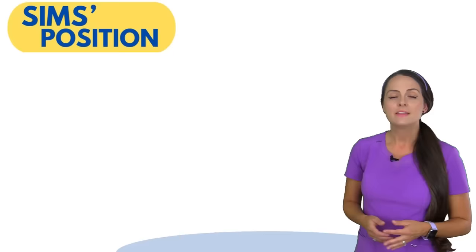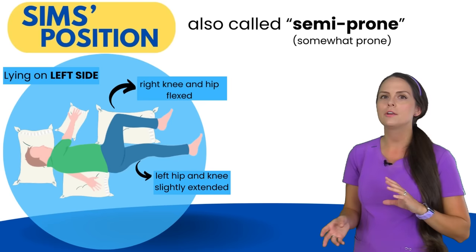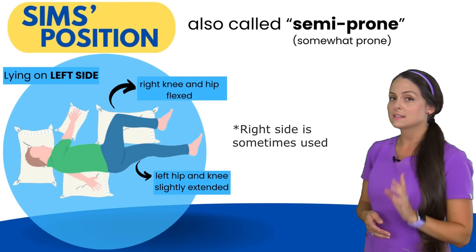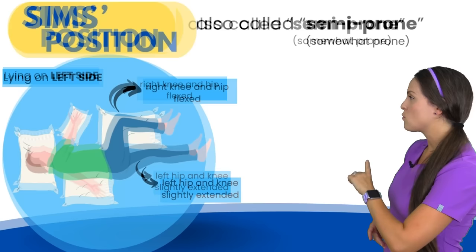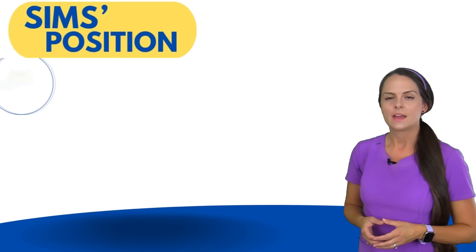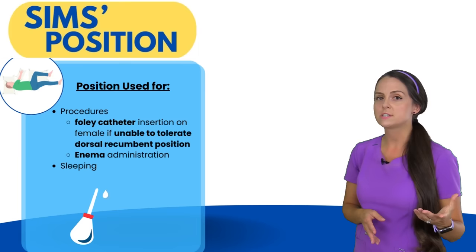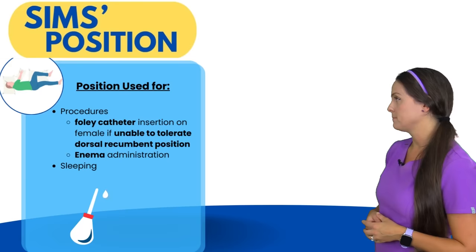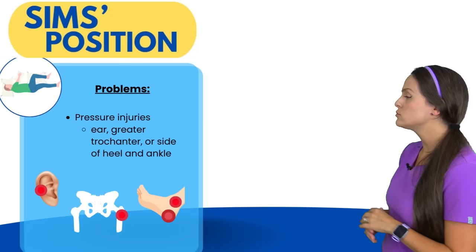Next is the Sims position, also called semi-prone. The patient is somewhat prone but not completely lying on the abdomen. The patient lies on their left side — that is the key with the Sims position. The right hip and knee are flexed while the left hip and knee are slightly extended, with the right arm at the side and the left arm slightly behind the patient. This position can be used for Foley catheter insertion on female patients when the dorsal recumbent isn't possible due to mobility issues, for enemas, and for sleeping. Pressure injury risks include the ear, greater trochanter, and the side of the heel and ankle.